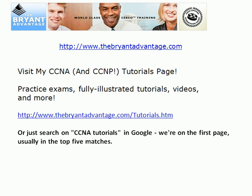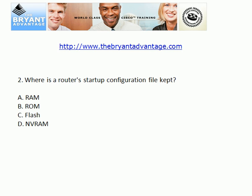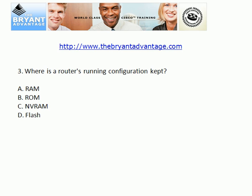Let's take a look at the answers to these questions. The IOS images are stored by default in Flash, so the correct answer here was B. The startup configuration is kept in non-volatile RAM, NVRAM. The contents of NVRAM are not lost on a reload. So here our startup configuration is kept in NVRAM, where the running configuration is kept in RAM.